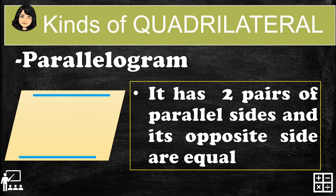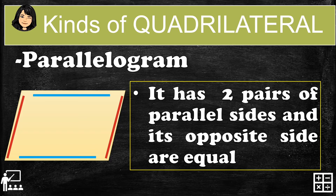First is the parallelogram. A parallelogram has two pairs of parallel sides and its opposite sides are equal. One pair is the blue one and the second pair is the red one. So if the blue one on the top has a measurement of 25 centimeters, the bottom part also has 25 centimeters — so they are equal.